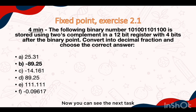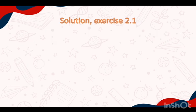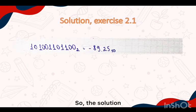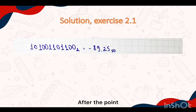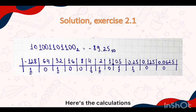Now you can see the next task. The solution: our binary number equals minus 89.25 in decimals, because we know that there are 4 bits after the point. On the screen you can also see the calculations showing how we get this answer.